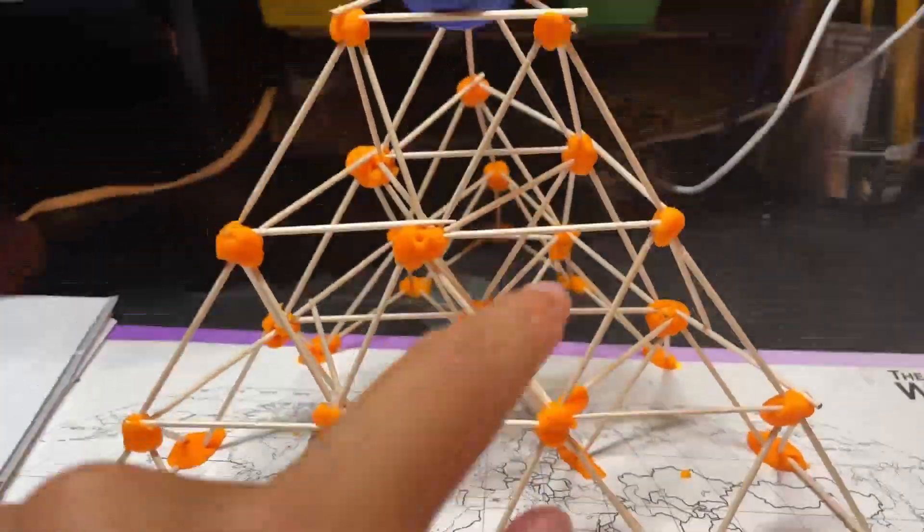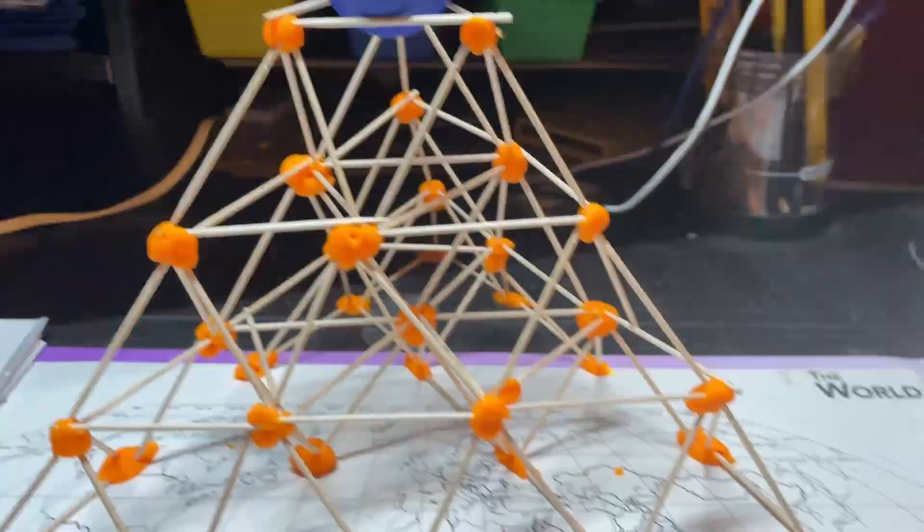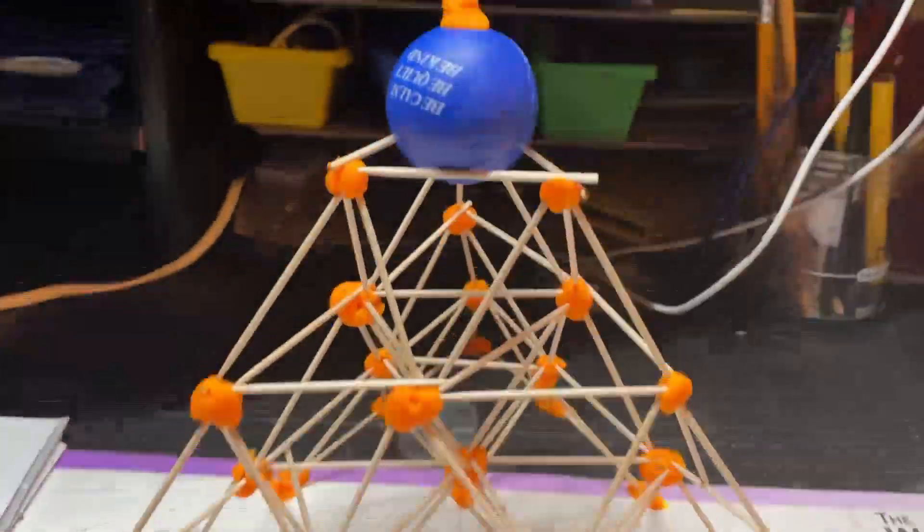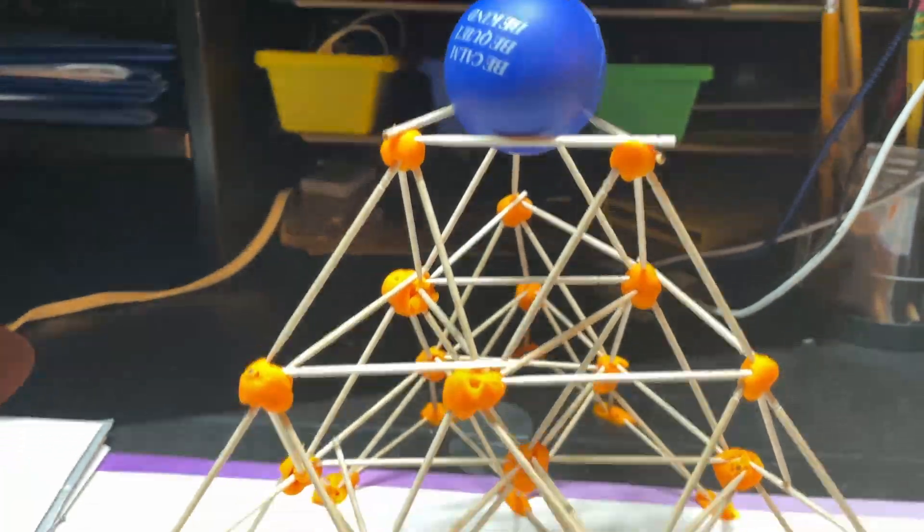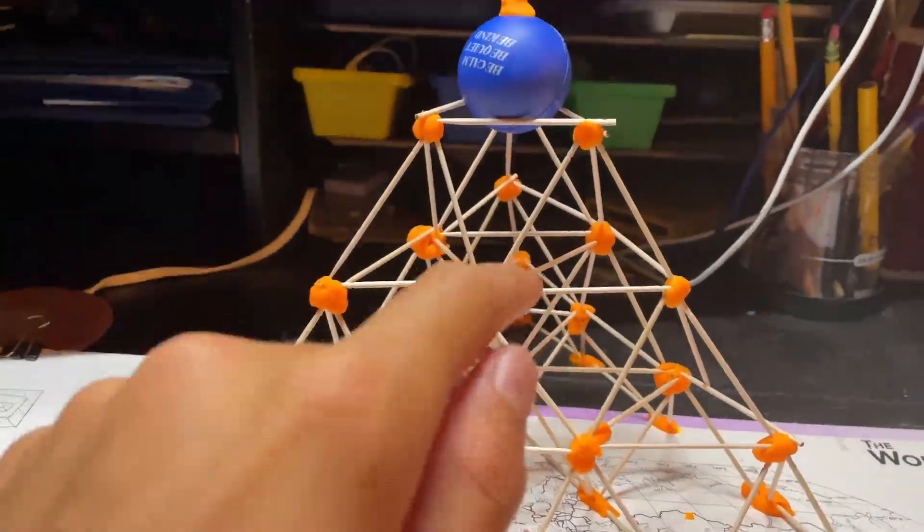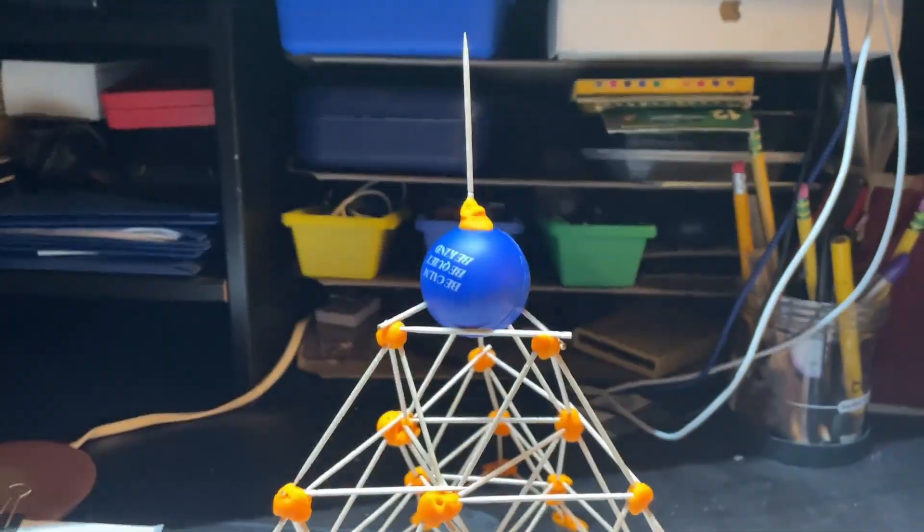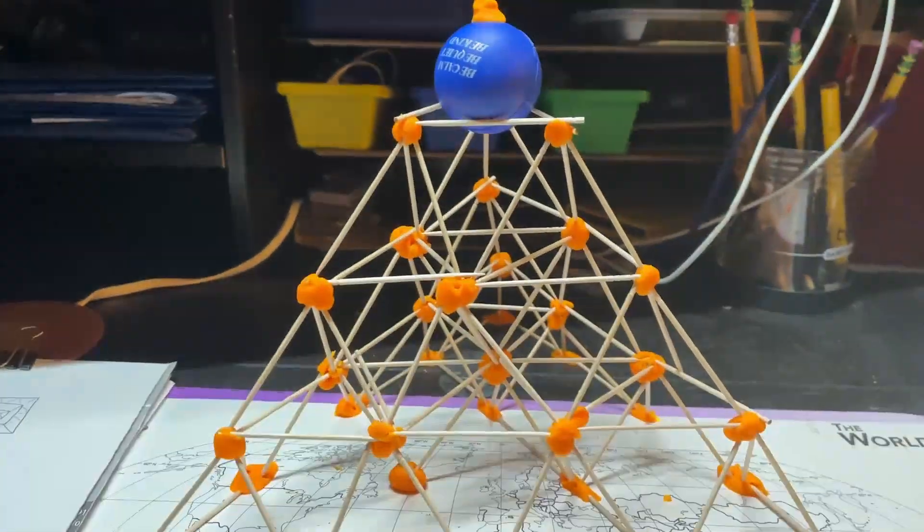I scraped some off so I could attach all the toothpicks to one another to facilitate that wider base. There's also the extra toothpick on top of the ball, so this makes it a total of one, two, three, four, five layers supporting the ball, which is pretty good.